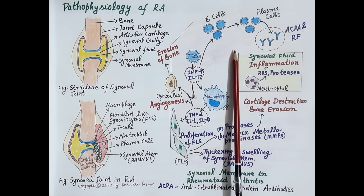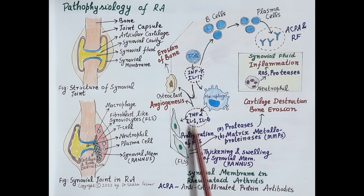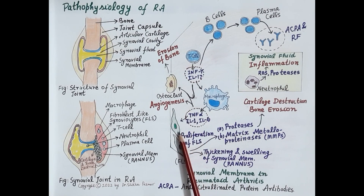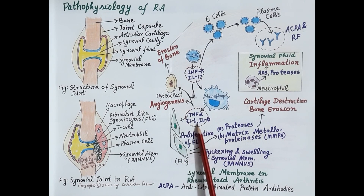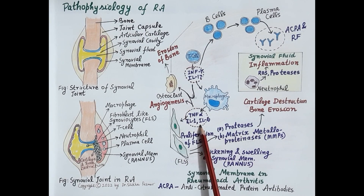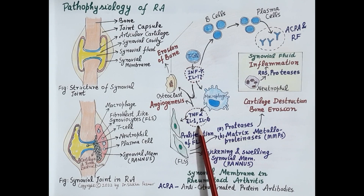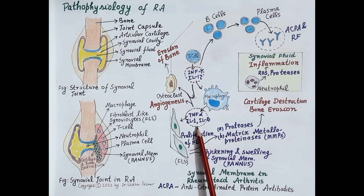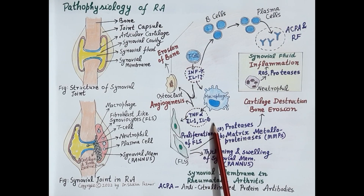Non-biological DMARDs suppress immune cells like T cells and B cells, while biological DMARDs inactivate cytokines like tumor necrotic factor alpha and interleukin-1. DMARDs produce remission — a retardation or complete suppression of rheumatoid arthritis disease — and thus prevent its progression.